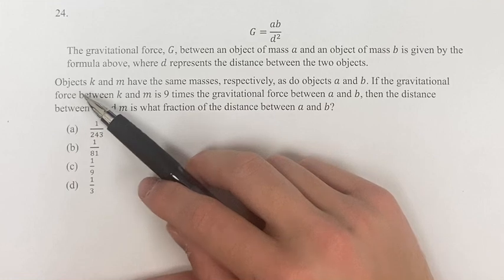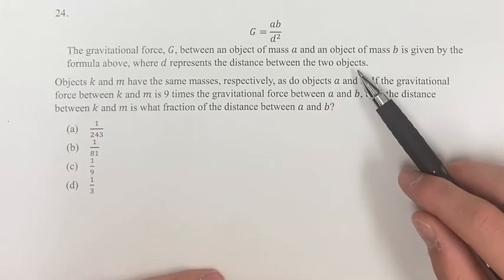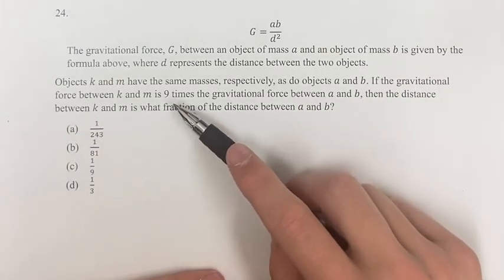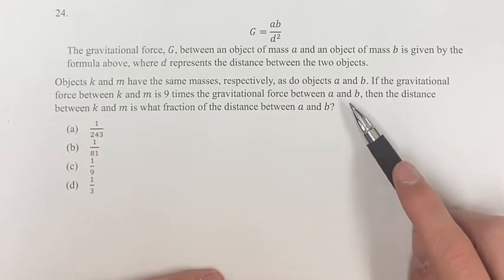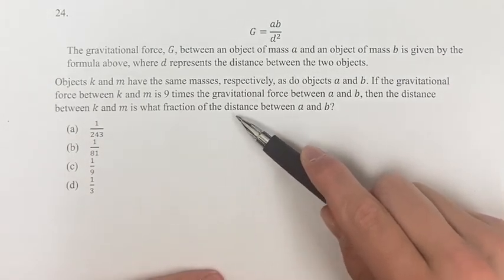We're asked that if objects K and M have the same masses respectively as do objects A and B, the force between K and M is nine times the gravitational force between A and B, then the distance between K and M is what fraction of the distance between A and B.